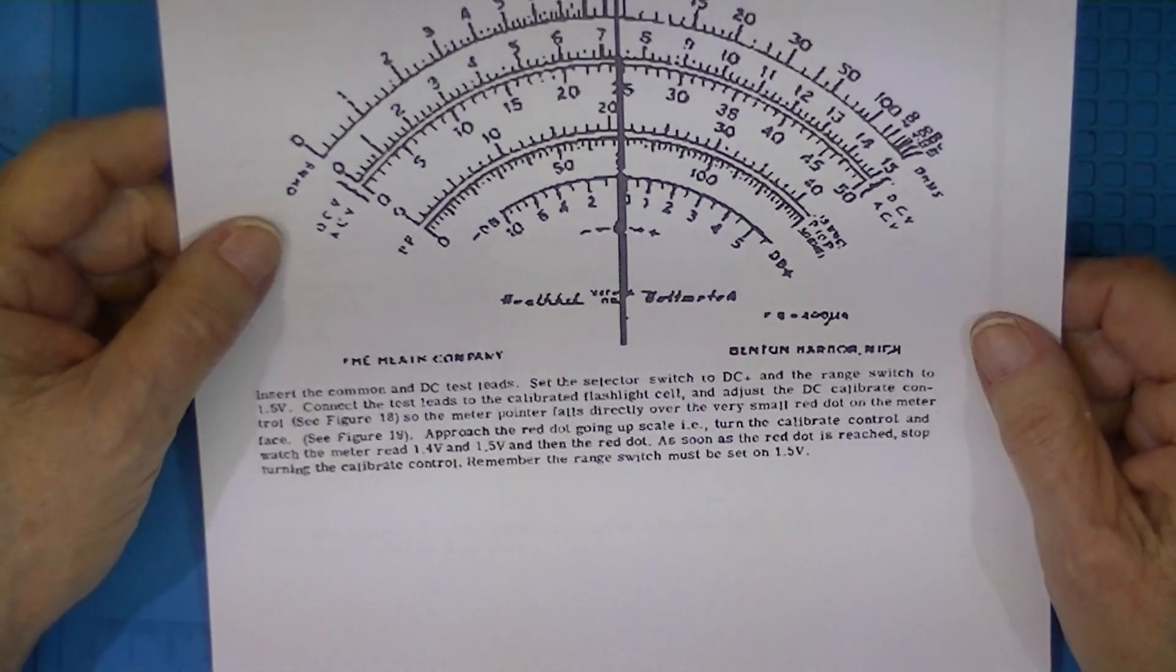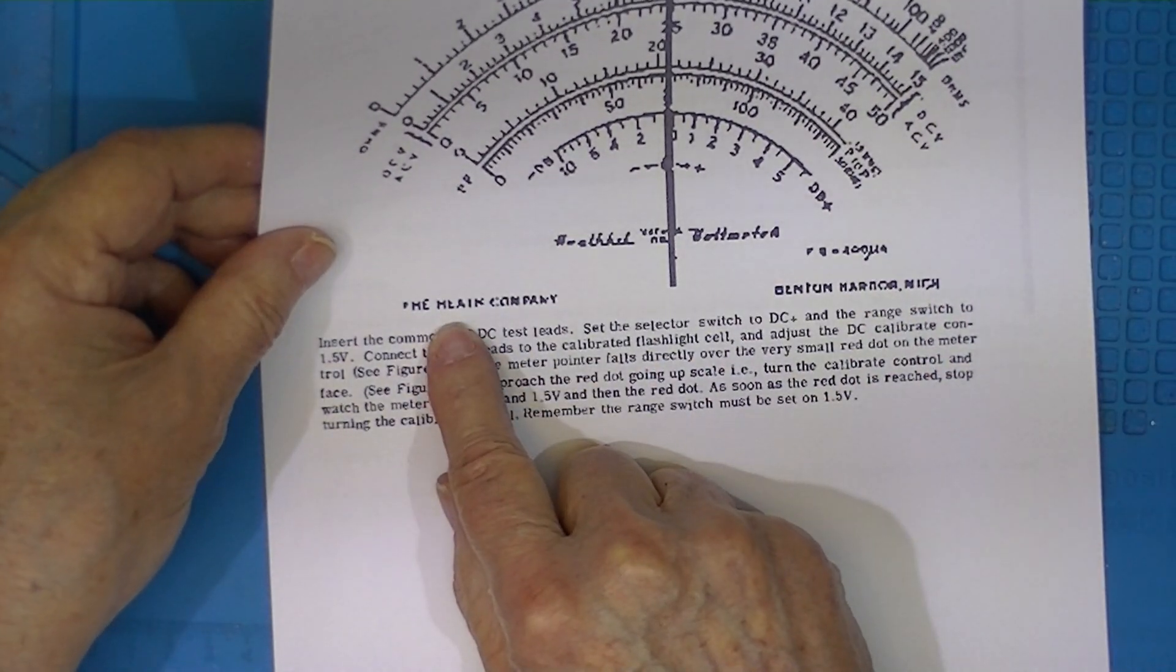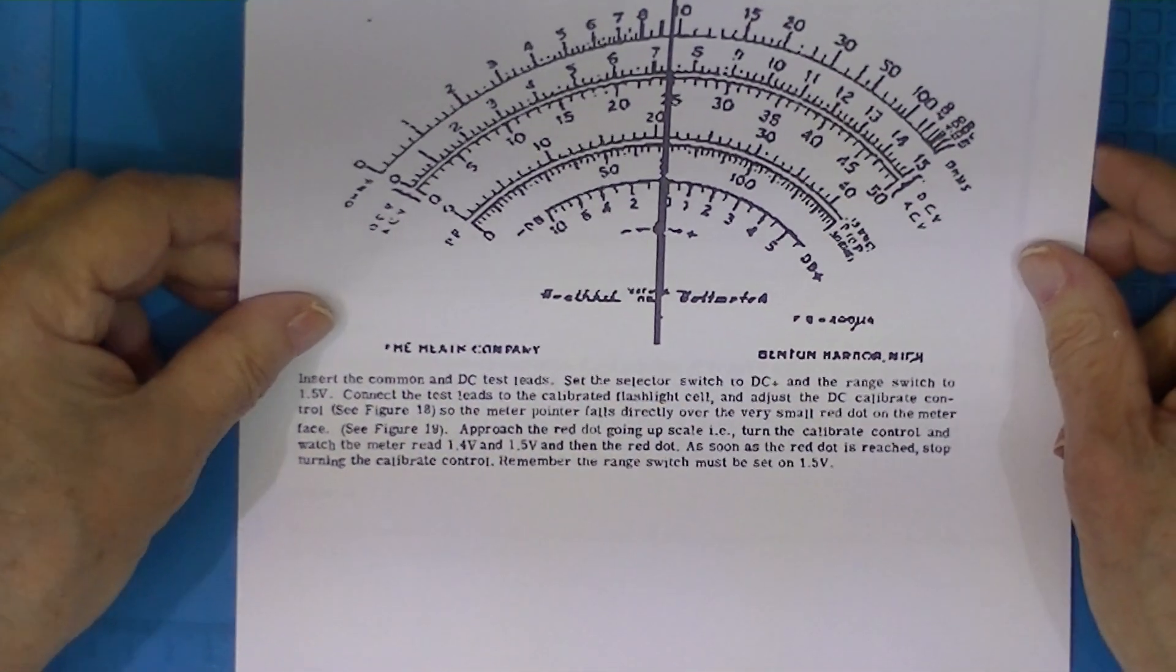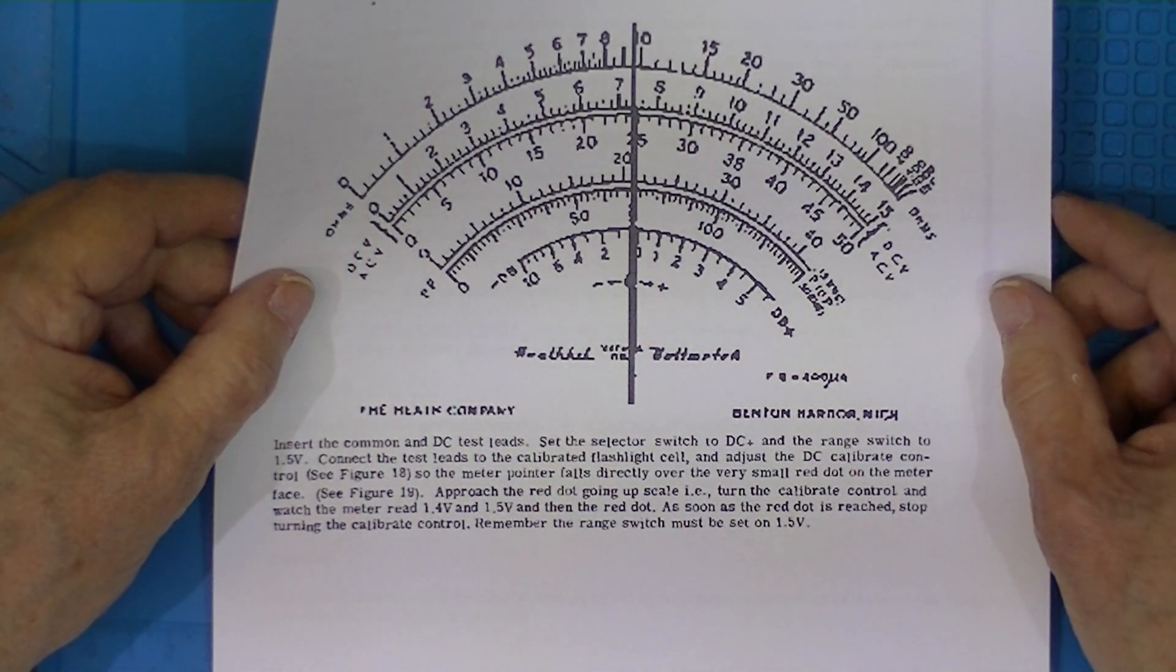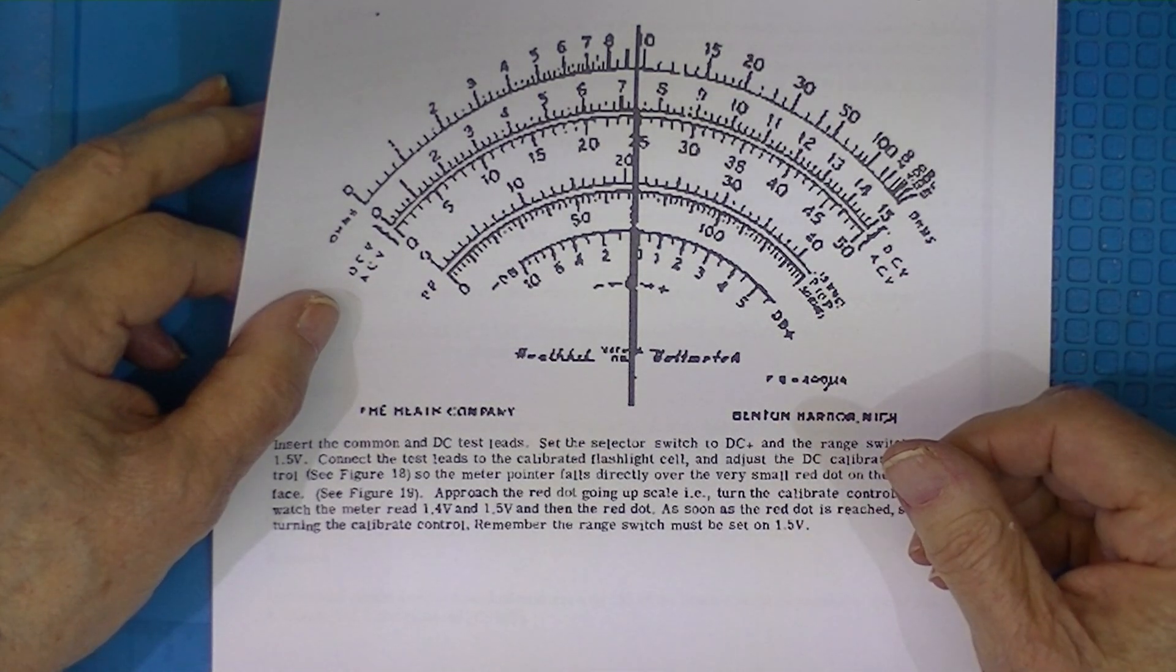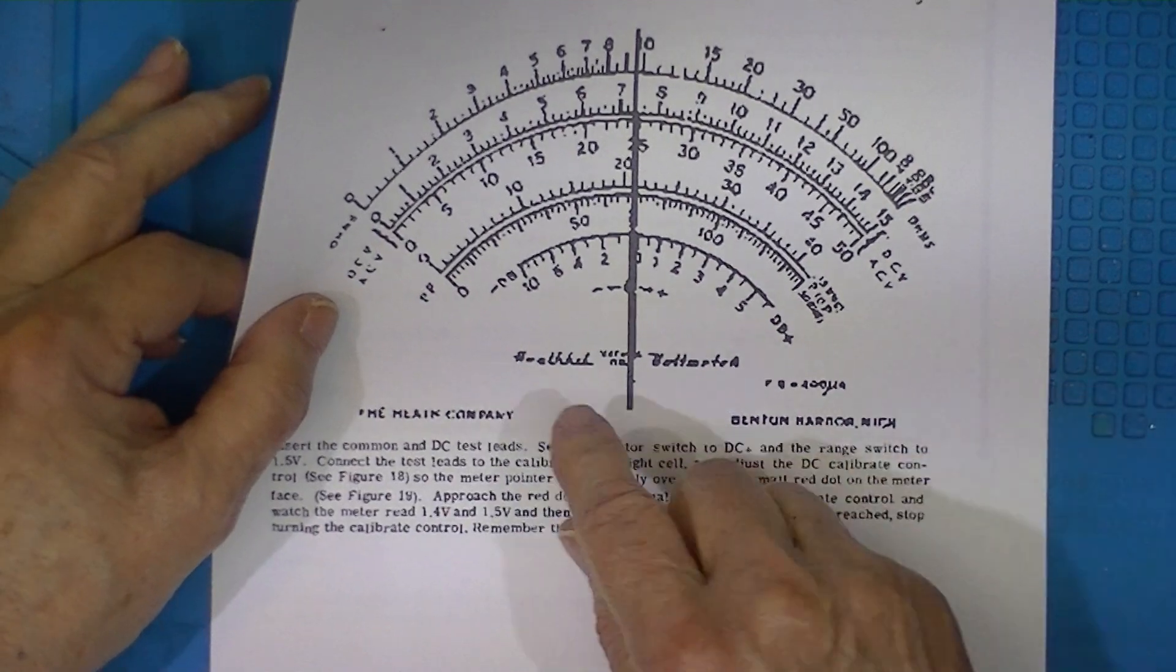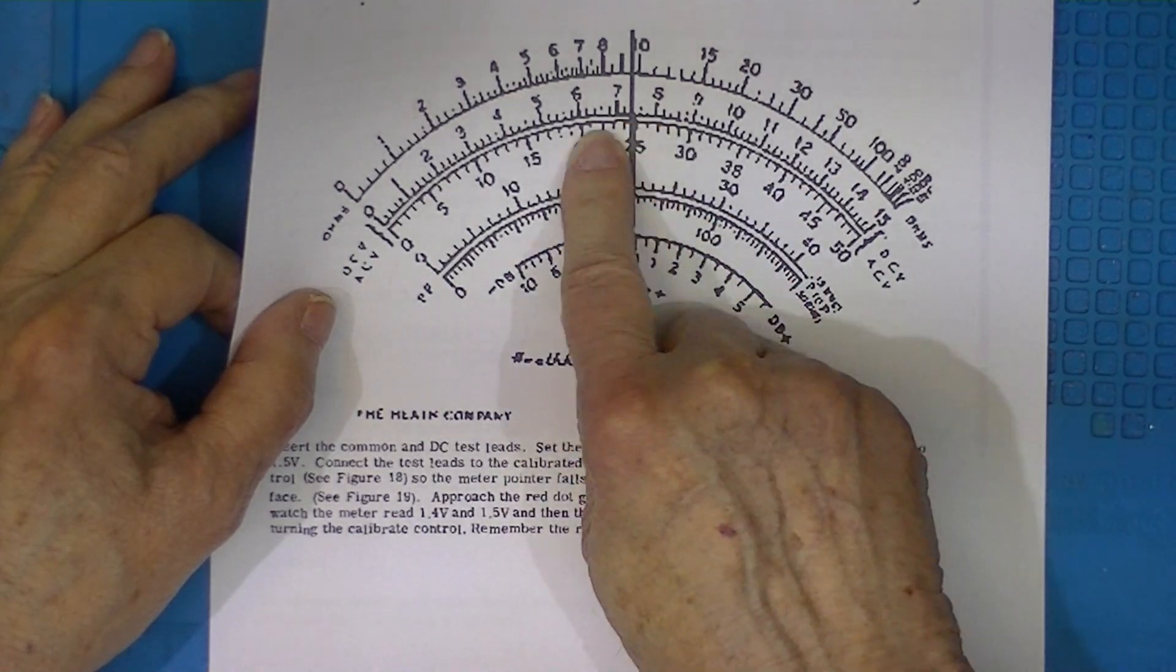So in the 50s, Heathkit—the Heath company which operated under the name Heathkit—offered a whole line of test equipment. And one piece of equipment it offered was a vacuum tube voltmeter. I think this first came out maybe in 1949, certainly by 1951. And this is a copy of the scale of one made in the 60s, I'm thinking.